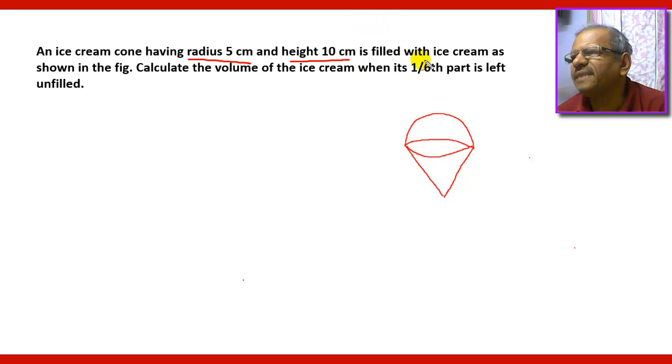Calculate the volume of the ice cream when one sixth of its part is left unfilled. Means one sixth of the volume of this total is left unfilled. It means five sixth is filled with ice cream, so five sixth of this total volume will be the volume of the ice cream.